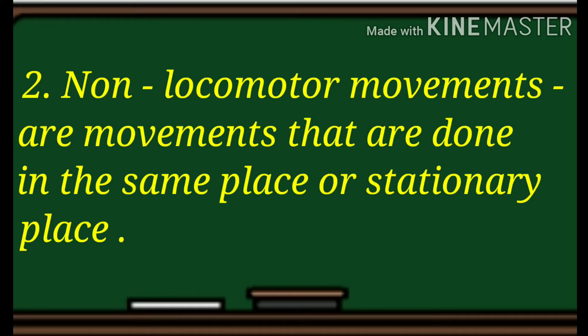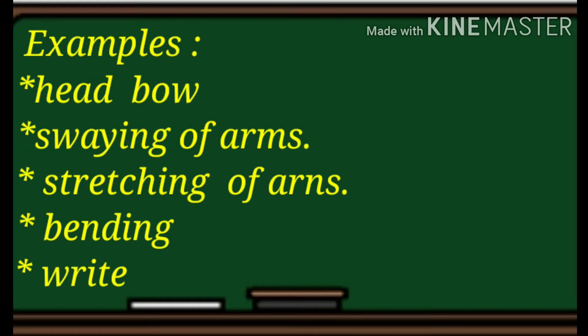The second movement is the non-locomotor movements. When we say non-locomotor movements, these are the movements that are done in the same place or in a stationary place. For example: head bow, swaying of arms, stretching of arms, bending. Those movements are done in the same place — in a stationary place.